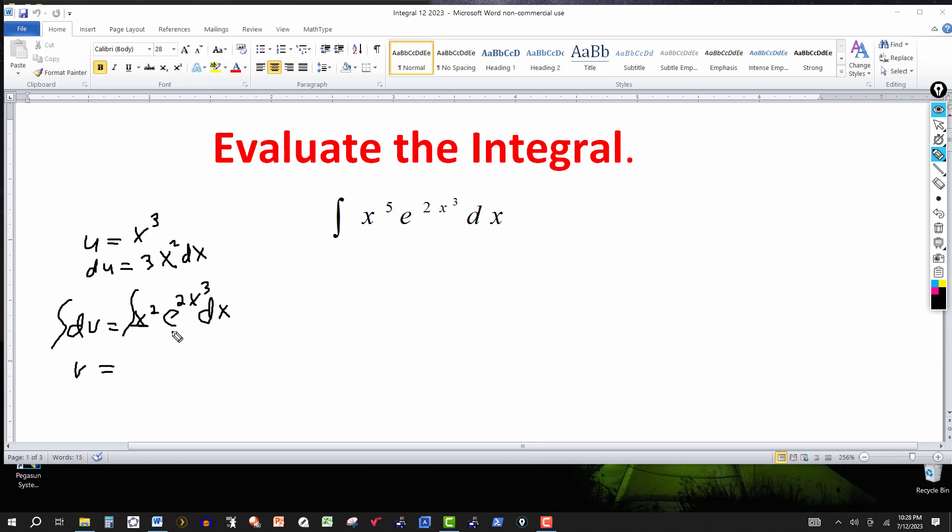So if you were to use a standard u substitution on this, you would let u equal 2x cubed. But we can just do it this way and say this would be e to the 2x cubed. We get a factor of 6. This would be 1/6 right here. And then we just can check it.